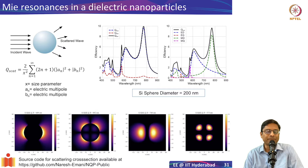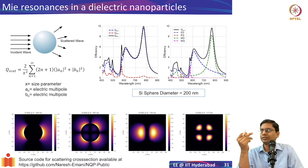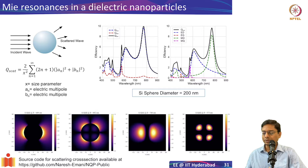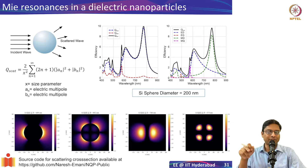I've shown this slide before — we consider what happens when an electromagnetic wave is incident on a sphere using Mie theory, which I covered in week 4. We can calculate scattering cross-sections: how efficiently the sphere scatters is captured by scattering efficiency. There are various peaks corresponding to modes — electric dipole, quadrupole, and also magnetic dipole and quadrupole arising from circulating displacement currents inside the nanoparticle.